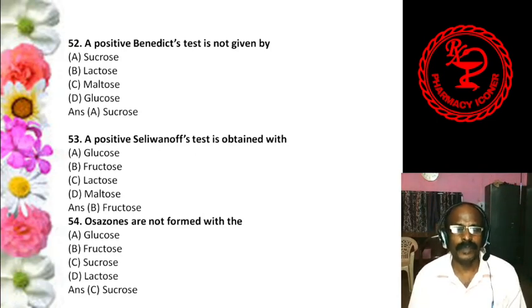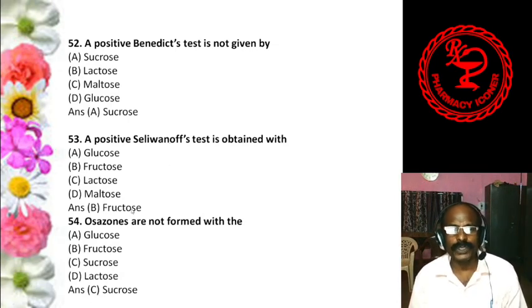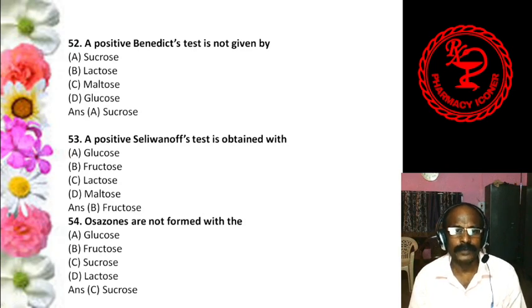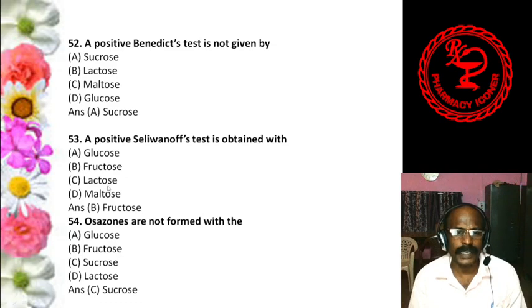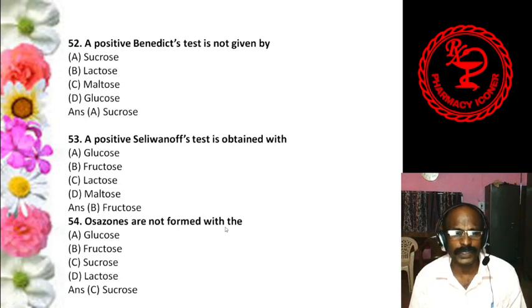Question 14: The only carbohydrate which does not have any chiral carbon atom is — A. Glyceraldehyde, B. Erythrose, C. Dihydroxyacetone, D. Erythrulose. The answer is C, dihydroxyacetone. Dihydroxyacetone has no chiral carbon and is also relevant in glycolysis.